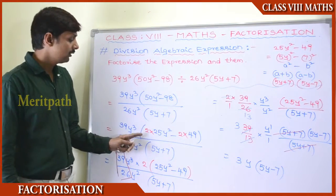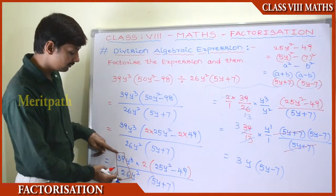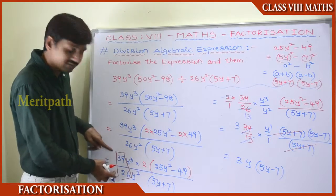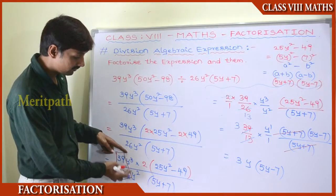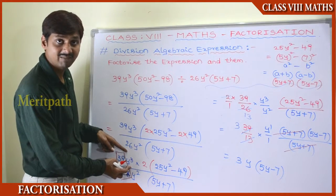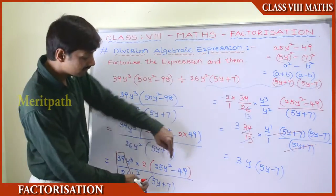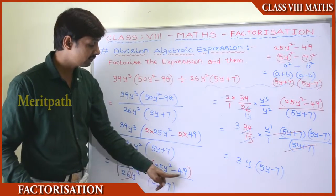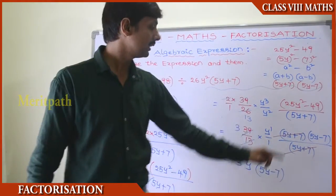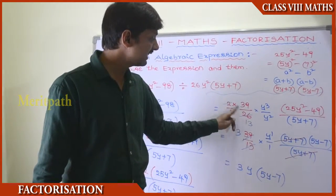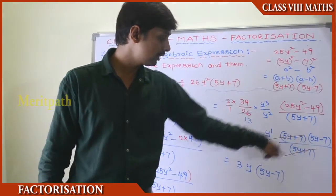Recapping: we started with 39y³(50y² − 98) ÷ 26y²(5y + 7). We found common factor 2 in 50y² − 98, giving 2(25y² − 49). We divided the numerical and variable parts, leaving 25y² − 49 over (5y + 7). Using a² − b², that became (5y + 7)(5y − 7), cancelled (5y + 7), and got the final answer: 3y(5y − 7).